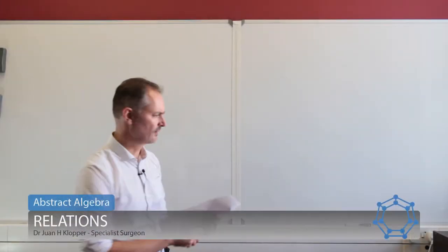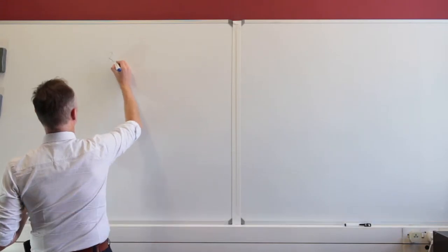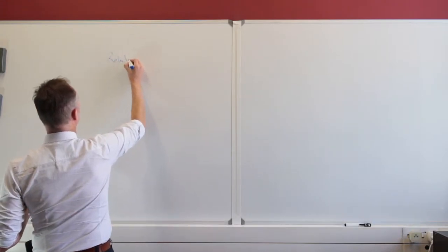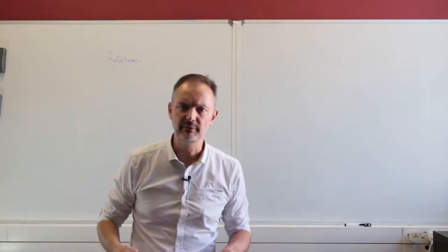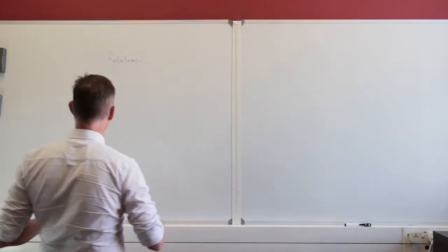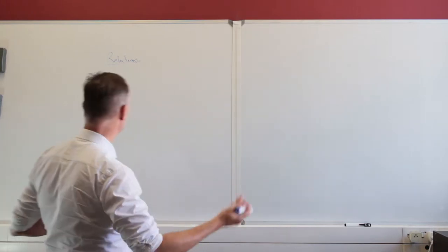So in this section let's start talking about what we're going to term relations. Now that builds on something that we've seen before and that was the product set. And a relation is just a subset of the product set of a set onto itself.